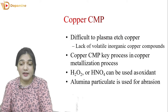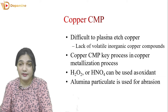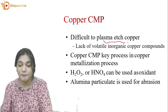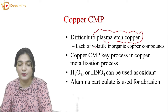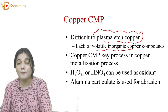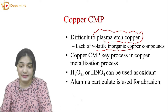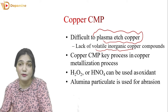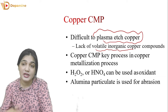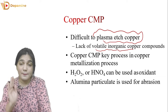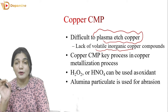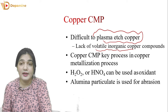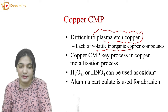Coming to copper CMP — copper CMP is the most difficult etching process. It is difficult to plasma etch copper. Even with plasma etching, copper etching is difficult because there are very few volatile inorganic copper compounds. Copper will not easily form a compound that goes into the gas state. So copper has very few compounds that will become volatile. Therefore, plasma etching of copper is very difficult.